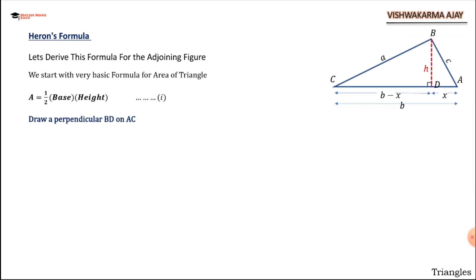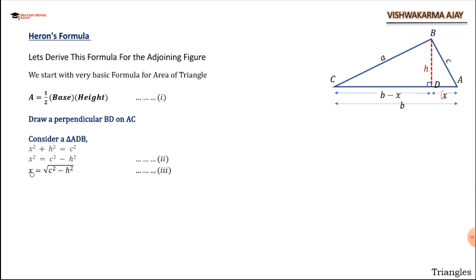We have already drawn the perpendicular. Now consider triangle ADB. By applying the Pythagoras theorem, we can say that x squared plus h squared equals c squared. So the value of x squared equals c squared minus h squared, and by taking the square root, x equals under root of (c squared minus h squared).